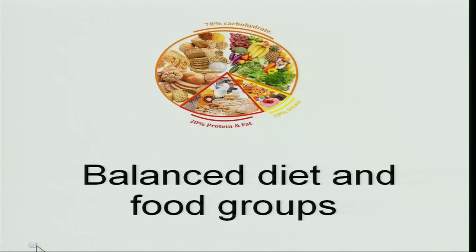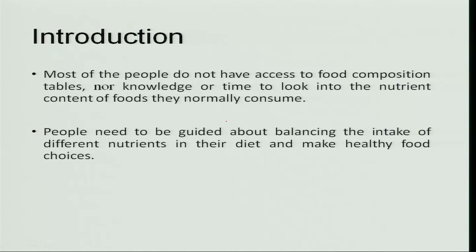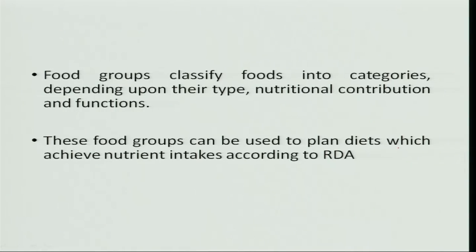Let us see what is a balanced diet and food groups. You can see the figure here where it is given with different types of foods: 70 percent of carbohydrates, 10 percent of calories from other foods, and 20 percent from protein and fat. Food groups classify foods into various categories depending upon their type, nutritional contribution, and the functions they carry out in the body.